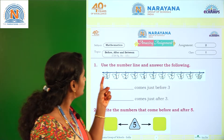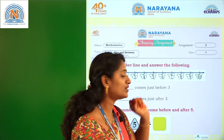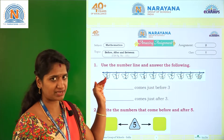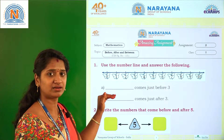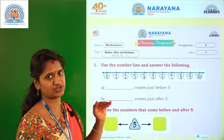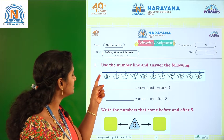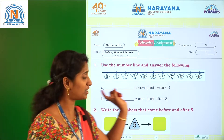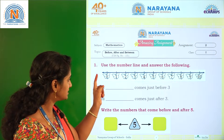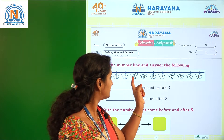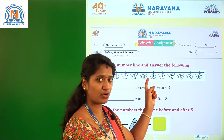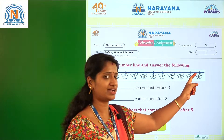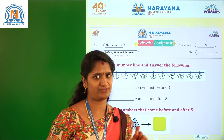Question number 1: Use the number line and answer the following. Here they have given a number line and we need to answer these questions. In this number line, the numbers given are 0, 1, 2, 3, 4, 5, 6, 7, 8, 9, and 10.